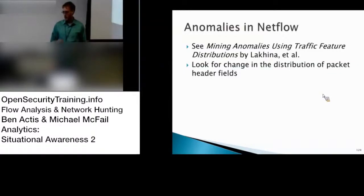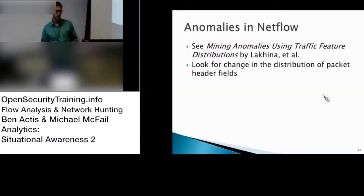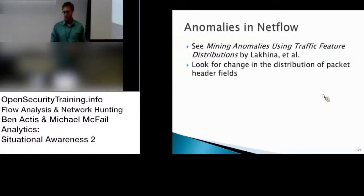Another pointer to academic work: an interesting paper, 'Mining Anomalies Using Traffic Feature Distributions.' They were looking for changes in the distribution of fields over time — for example, graphing all your source IP addresses as a histogram and looking at how that distribution changes hour by hour or day by day. There's been a lot of work on looking at anomalies in network security, and this is just one of many contributions.